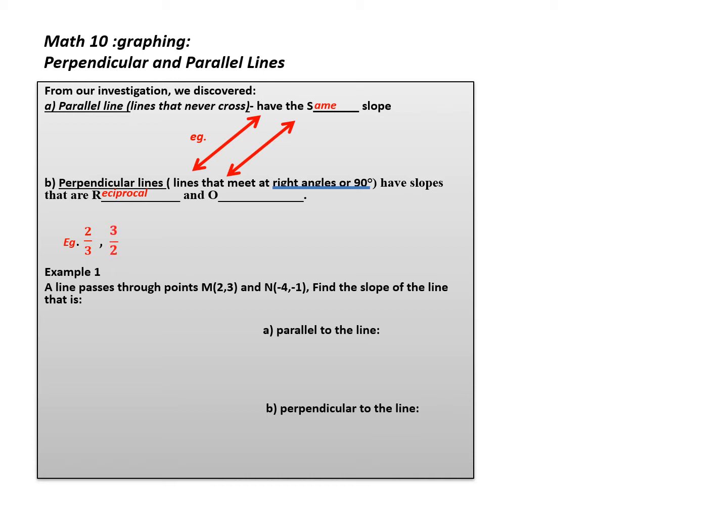Perpendicular lines must also be opposite, which means that the signs are different. So if one slope is negative, the other has to be positive.